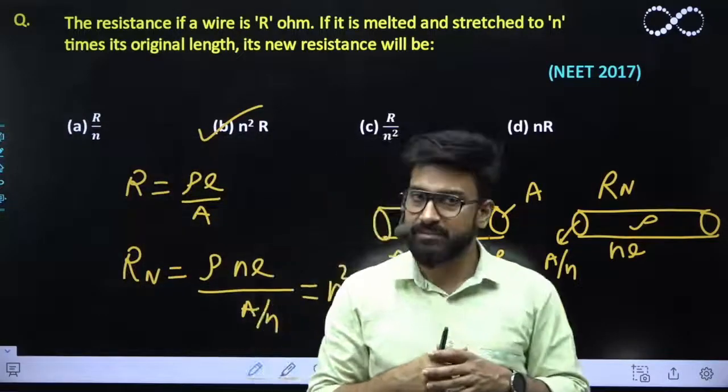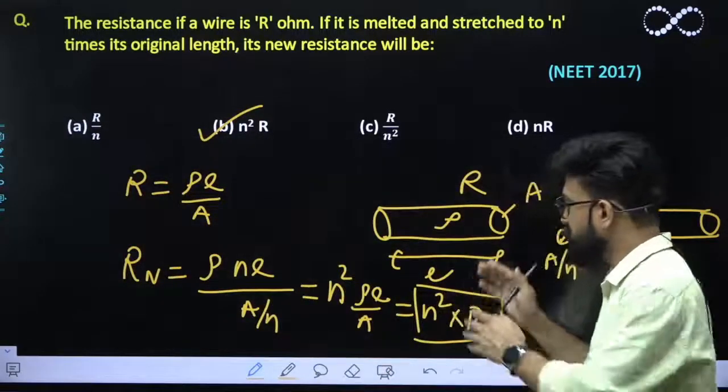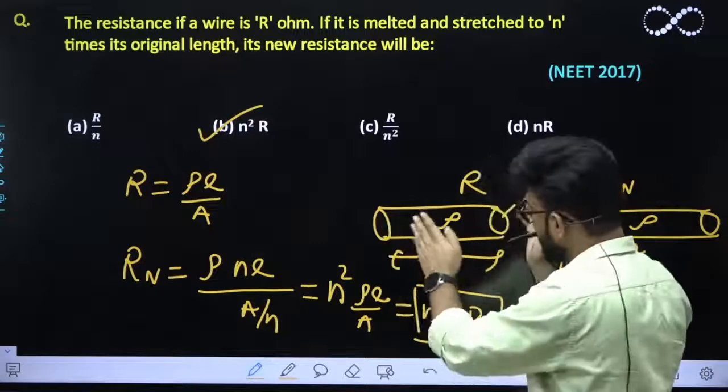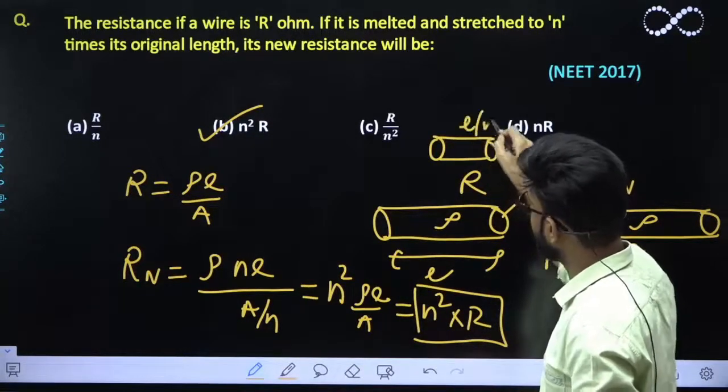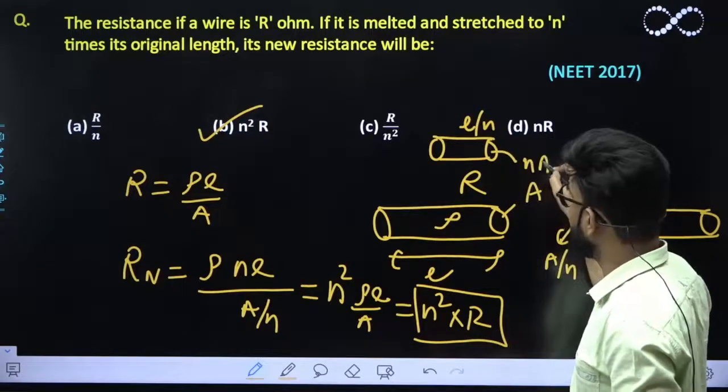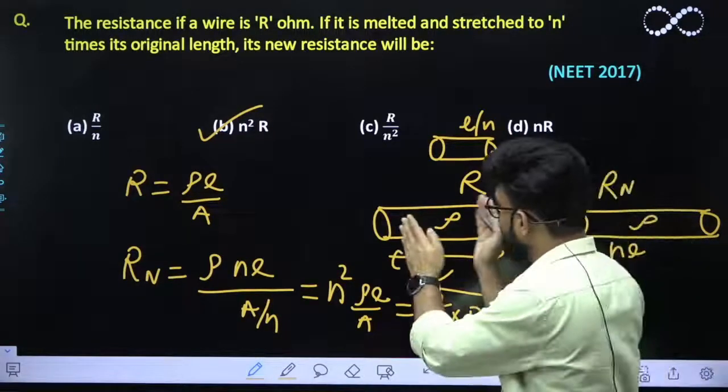A similar case can also be concluded if it is flattened and its length becomes l/n times, so the area would become n times a. Obviously if length reduces, its area becomes more.